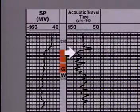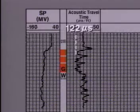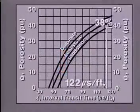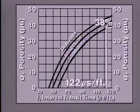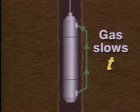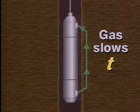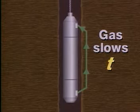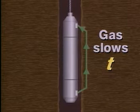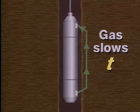Here, in the effective gas column, we read a travel time of 122 microseconds. Using our chart for a consolidated sandstone gives us a porosity value of 38%. Remember that gas in the formation will tend to slow the sonic waves, resulting in the log reading more than true porosity.